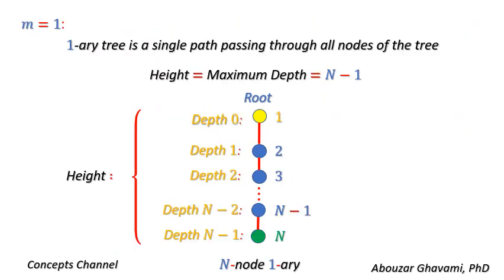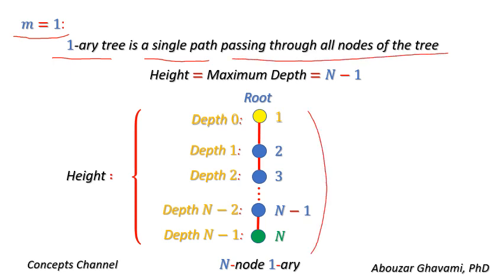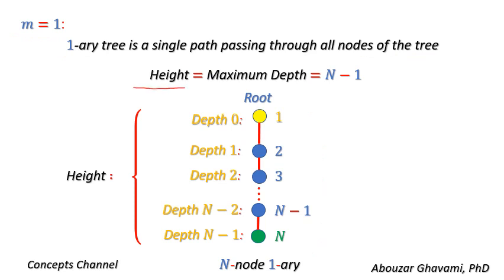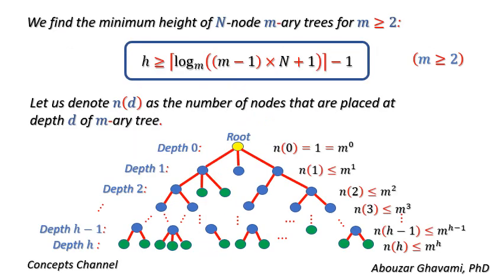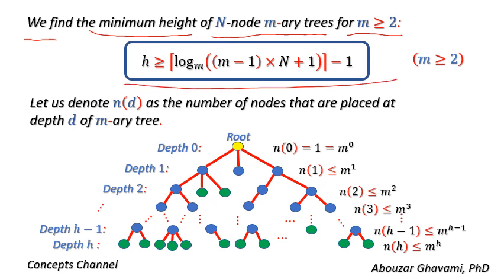Let us consider the case where m is equal to 1. A 1-ary tree is a single path passing through all nodes of the tree. The height of a 1-ary tree is equal to its maximum depth, which equals n minus 1. We find the minimum height of n-node m-ary trees for m greater than or equal to 2. Let us denote n(d) as the number of nodes placed at depth d of the m-ary tree.